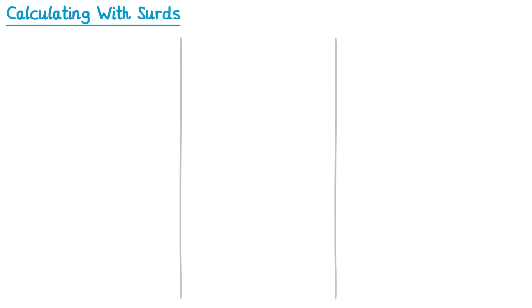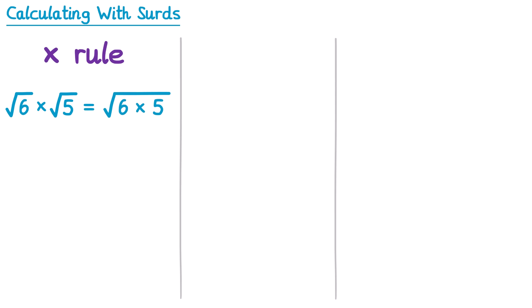When working with surds there are lots of different rules. First let's look at the multiplication rule. If you take two surds, like the square root of 6 and the square root of 5, and multiply them together, this is the same as multiplying those numbers inside one square root — the square root of 6 times 5. We know 6 times 5 is 30, so this is the same as the square root of 30.